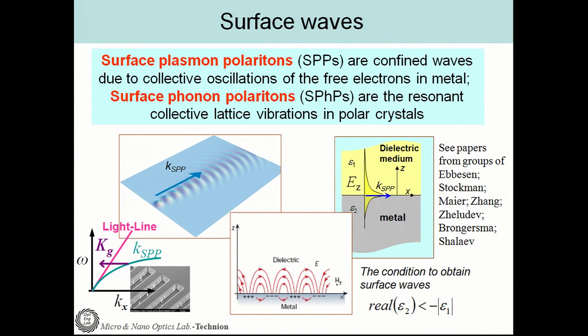Surface waves can be surface plasmon polaritons, which are confined waves due to collective oscillations of electrons in a metal, or surface phonon polaritons, which are resonant collective lattice vibrations in polar crystals. For visible radiation we utilize surface plasmon polaritons, but for mid-infrared thermal emission we utilize surface phonon polaritons. The surface waves are evanescent waves, and in order to couple them into propagating waves we must satisfy momentum matching, which is possible using periodic structures.